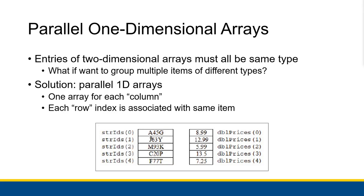They're just not part of the same array on the technicality that 2D array data types must all be the same. Here's another example: we have one array that has product IDs, which are strings, and another array which has prices, which are doubles. So for the product c20p — if I wanted to get the price of c20p, I'd have to recognize that it is at subscript 3 in string IDs, so its associated price would be at subscript 3 in double prices. That's how this type of solution works with these parallel arrays — they're separate arrays, completely different types, but they have that association which we enforce through our programming.